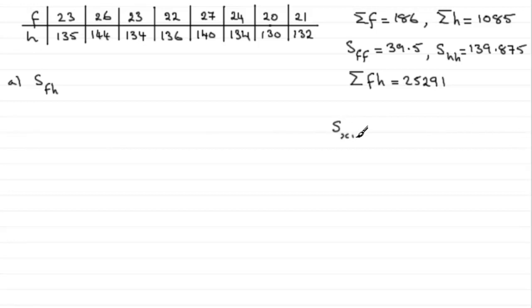That is S_xy. S_xy equals the sum of sigma xy minus sum of x times the sum of y all divided by the number of columns you've got in your table n.